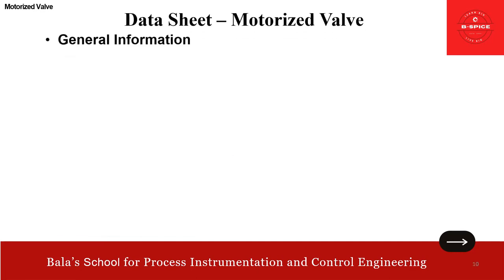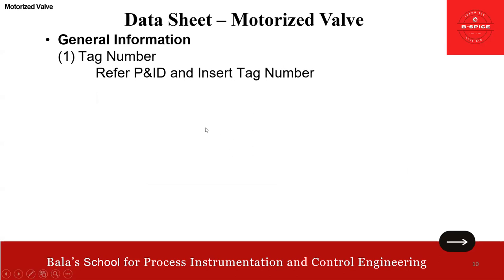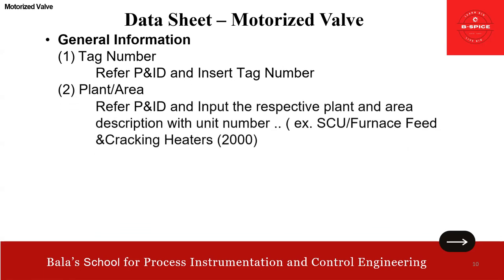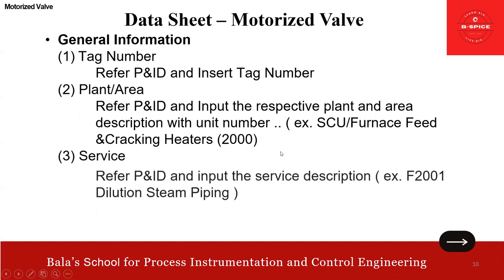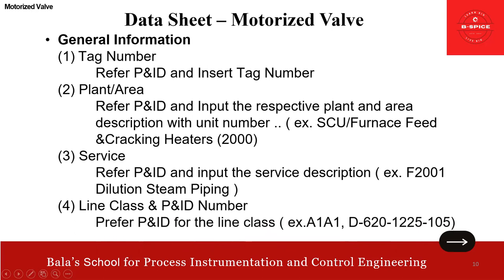Now we'll go into the actual data sheet. The first item is tag number — refer to the P&ID and insert the tag number. Plant area — refer P&ID and input the respective plant area description, unit number. In this case SU — furnace feed and cracking heaters, so SU is the steam cracker unit. Then service — refer P&ID and input the service description. For example, F2001 dilute steam piping. Line class and P&ID number — refer P&ID for line class, that is A1A1, and you have to refer the piping material class.